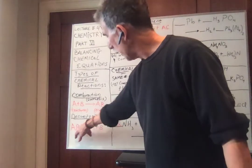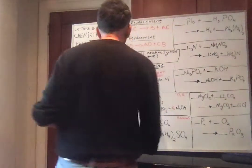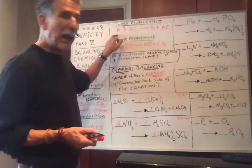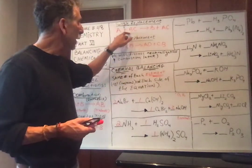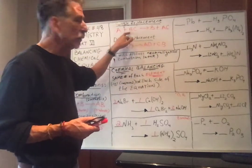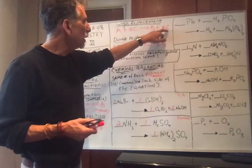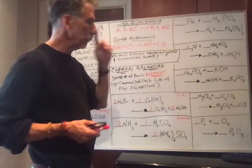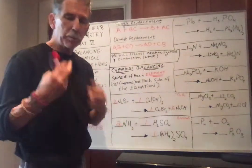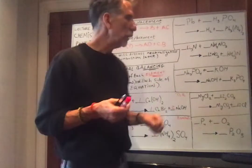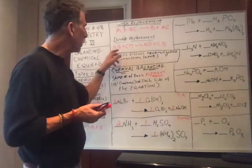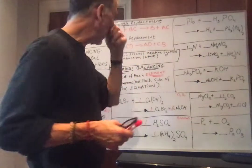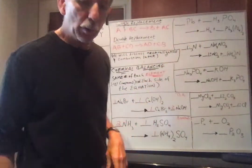Single replacement: you have a couple, B and C, but A comes along and C prefers A to B. So A replaces B and goes off with C — a single replacement, A is replacing B in BC. Double replacement: you have two sets of couples and they swap partners. AB plus CD: A goes with D, C goes with B. Double replacement.